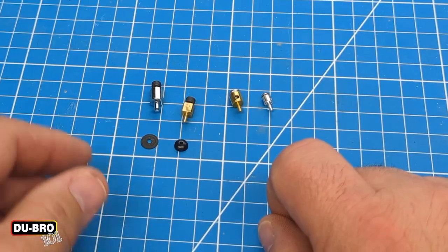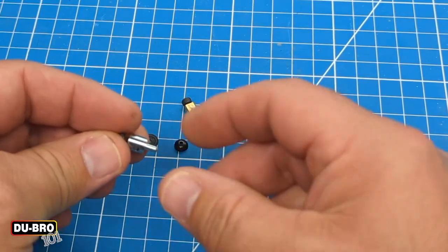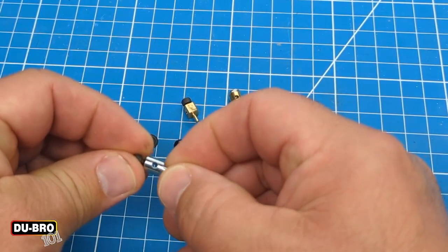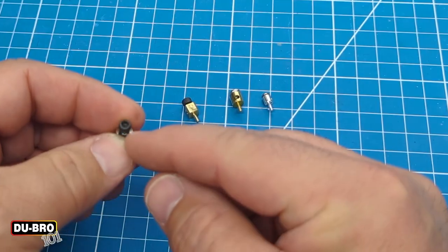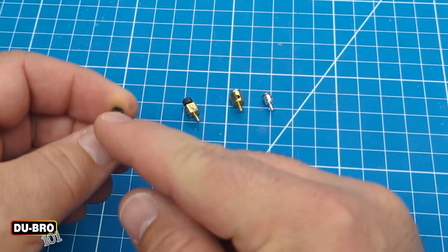For connecting to your push rod, it's a simple matter of sliding the push rod through the hole in the EZ connector and then tightening down your grub screw. This grub screw is done with a hex driver.